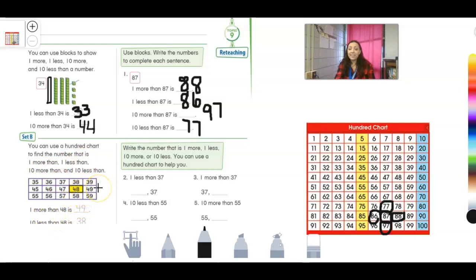One more than 48 would be 49. Very good. What about 10 less than 38? Am I going to go up or down? I'm going to go up because I need to take away that 10 and it would be 28. Very good.